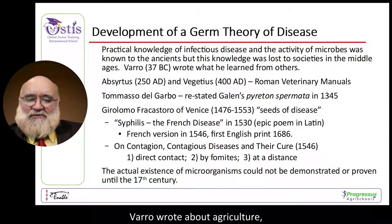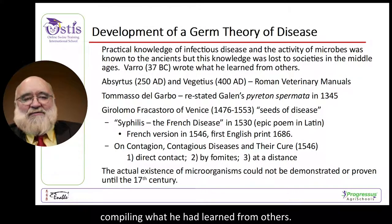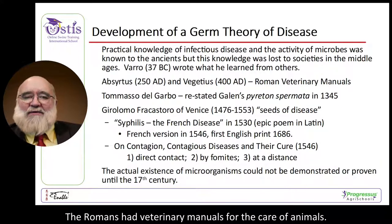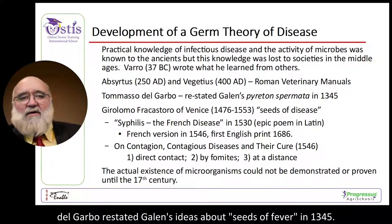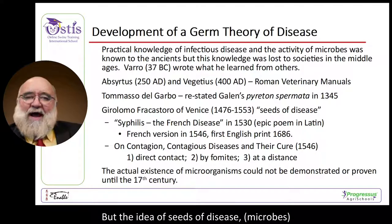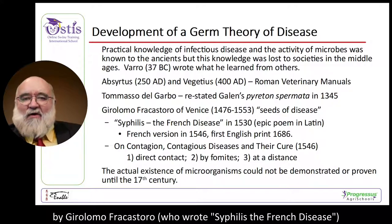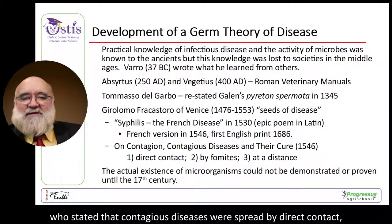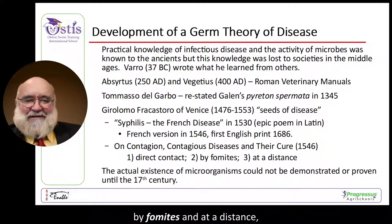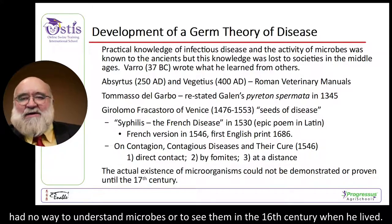Barrow wrote about agriculture, compiling what he had learned from others. The Romans had veterinary manuals for the care of animals. Del Garbo restated Galen's ideas about seeds of fever in 1345, but the idea of seeds of disease — microbes — and the methods by which they are spread was most famously elaborated by Girolamo Fracastoro, who stated that contagious diseases were spread by direct contact, by fomites, and at a distance. Fracastoro had no way to understand or see microbes in the 16th century when he lived.